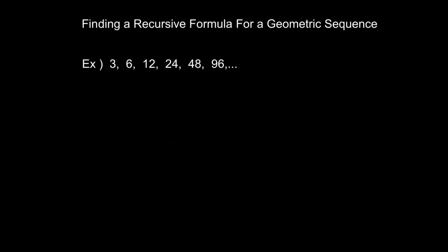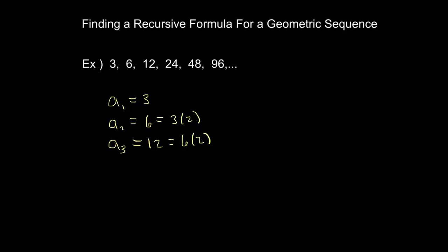Now we'll quickly do a recursive formula for a geometric sequence. A recursive formula for a geometric looks a little different than the one for an arithmetic, but the basic idea is the same. My first term here is three. My second term is six, which I can view as three times two. My third term is twelve, which I can view as six times two. My fourth term is twenty-four, which is twelve times two.